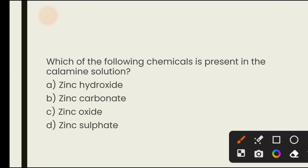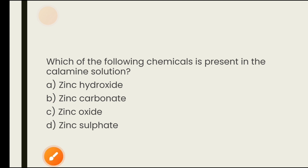Which chemical is present in the calamine solution? Options are zinc hydroxide, zinc carbonate, zinc oxide, zinc sulfate. The answer is B — zinc carbonate is present in calamine solution.